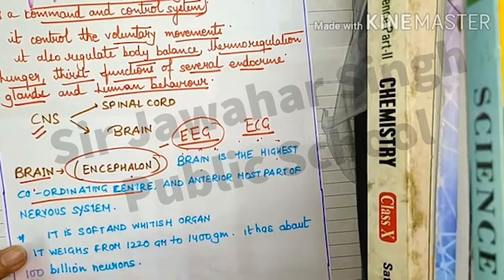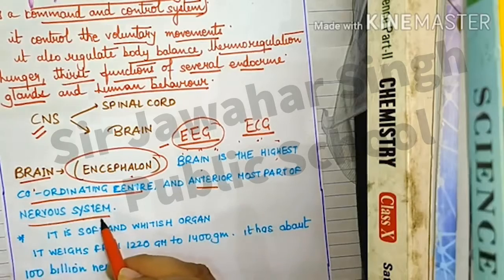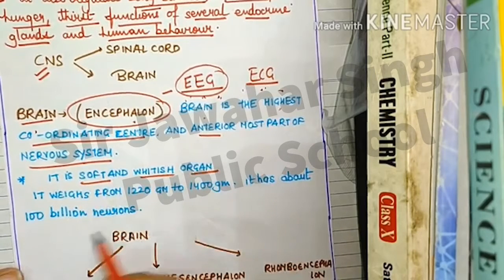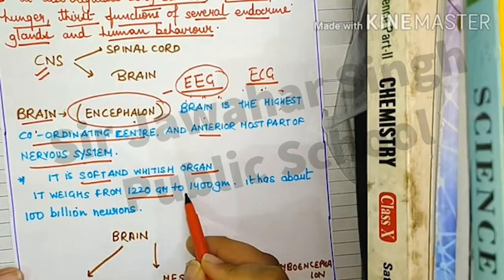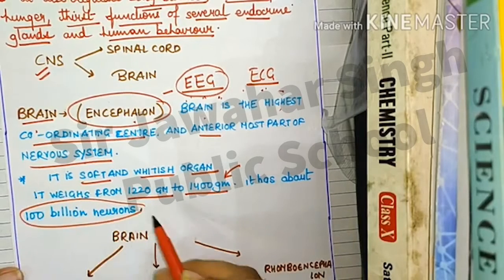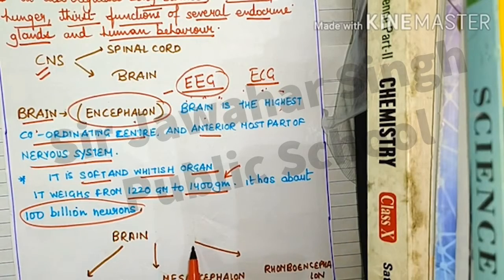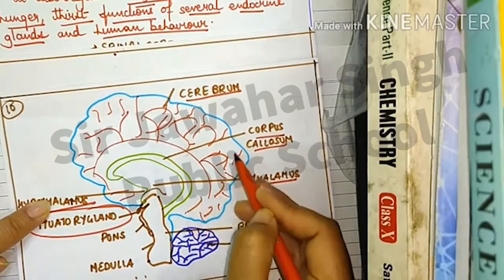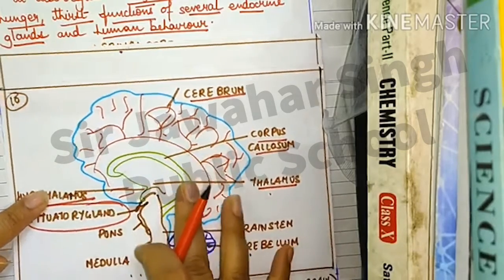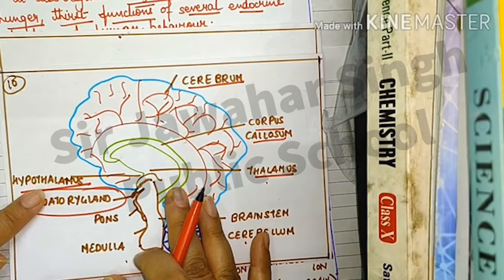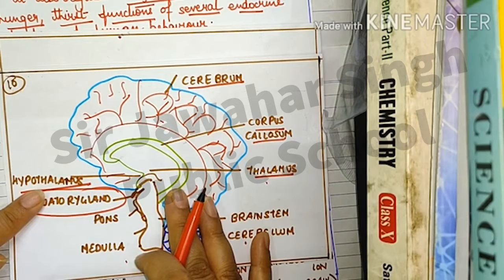The brain is the highest coordinating center and is present at the anterior-most, that is the front part, of the nervous system. It is a soft, whitish organ weighing approximately 1220 to 1440 grams, varying between males and females. The brain accommodates approximately 100 billion neurons. It has various convoluted structures to accommodate more and more neurons, which are the units of the nervous system that receive and send messages in the form of chemical and electrical signals.